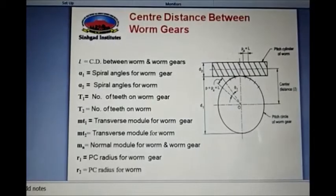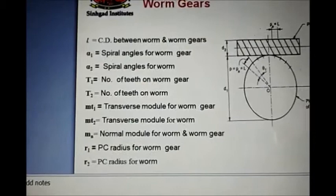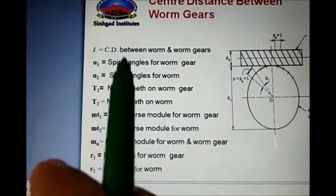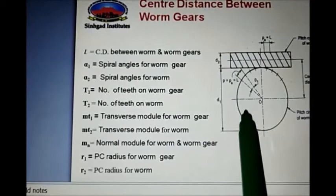Let's start a new topic on worm and worm gear, that is center distance — or we can say the derivation for center distance. Here we have a figure and according to this figure we have some nomenclature. L is the center distance between worm and worm gear, then α1 and α2 are the spiral angles of worm gear and worm respectively. We are going to use symbol 1 for worm gear and 2 for worm.